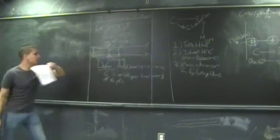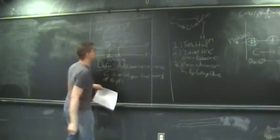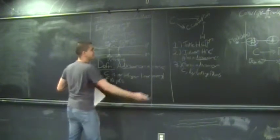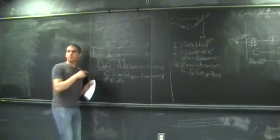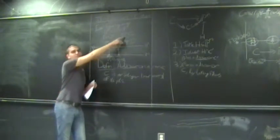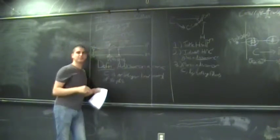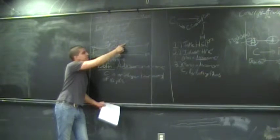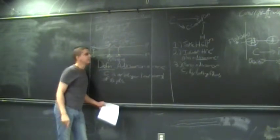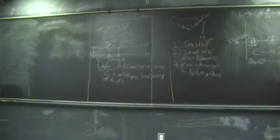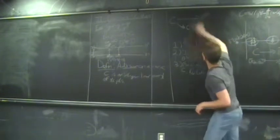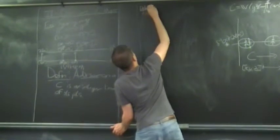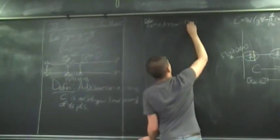Going to make one more definition here. For a divisor D on a curve C, we define a vector space L(D), which is the set of all rational functions F on C. If D = Σ nₚ·P − Σ mQ·Q (with positive nₚ and positive mQ), then L(D) consists of rational functions that vanish to order at least mQ at each Q, and blow up to order at most nₚ at each P. So negative coefficients are requiring zeros, and positive coefficients are allowing poles.